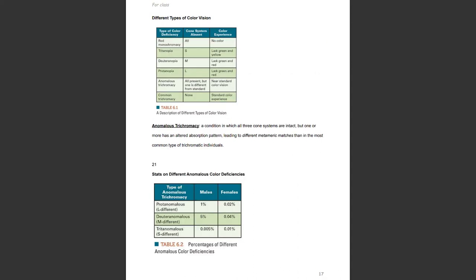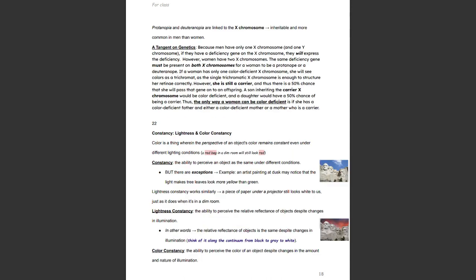Different types of color vision. Anomalous trichromacy is a condition in which all three cone systems are intact, but one or more has an altered absorption pattern, leading to different metameric matches than in the most common type of trichromatic individuals. Protanopia and deuteranopia are linked to the X chromosome, making them inheritable and more common in men than women.